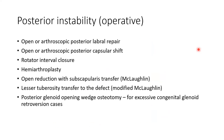Operative options for posterior instability include: open or arthroscopic posterior labral repair, open or arthroscopic posterior capsular shift, rotator interval closure (not fully proven), hemiarthroplasty, open reduction with subscapularis transfer (McLaughlin procedure), modified McLaughlin using lesser tuberosity with subscapularis attachment, and posterior glenoid opening wedge osteotomy mainly for congenital glenoid retroversion.